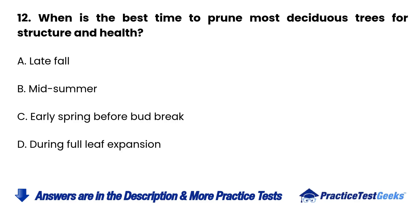Question 12. When is the best time to prune most deciduous trees for structure and health? A. Late fall. B. Midsummer. C. Early spring before bud break. D. During full leaf expansion.